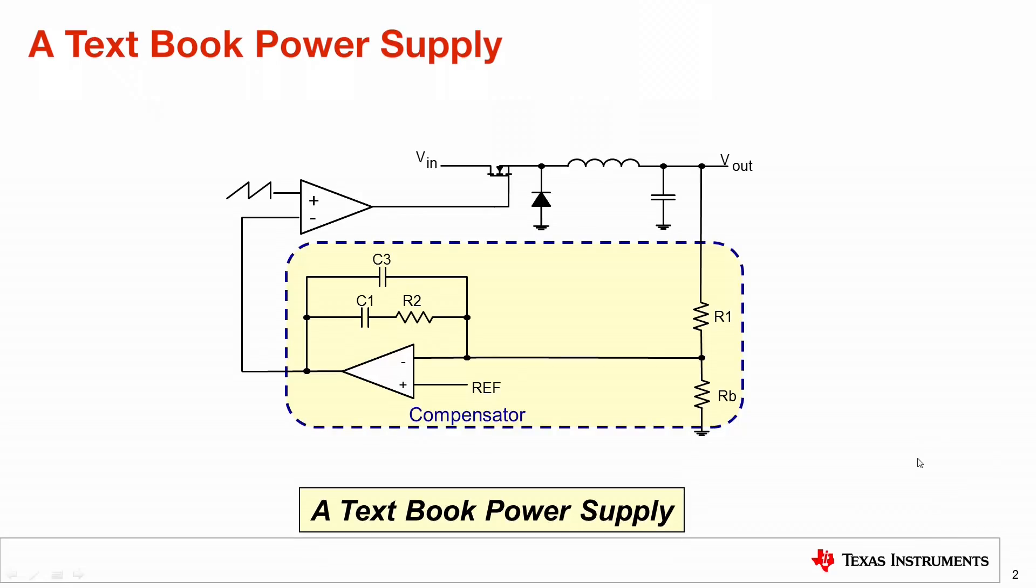So, if I look at my slides over here, this is a type of thing that we would study in a textbook. This is a textbook power supply. Over here I have got my power stage. Here I've got the PWM which is in fact part of the plant. And here I have got my compensator. We study this in our power electronics classes and we study the loop design in our control theory classes.